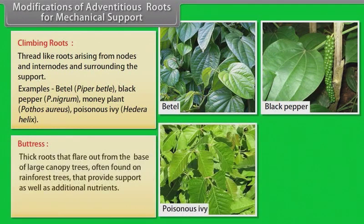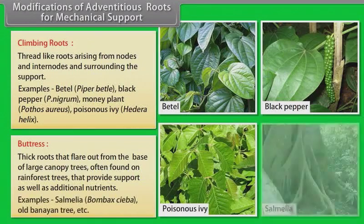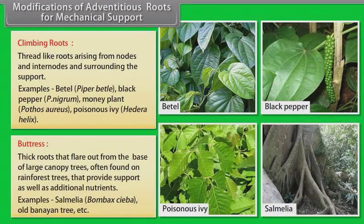Buttress roots — thick roots that flare out from the base of large canopy trees, often found in rainforest trees, providing support as well as additional nutrients. Examples: Salmalia, old banyan tree, etc.